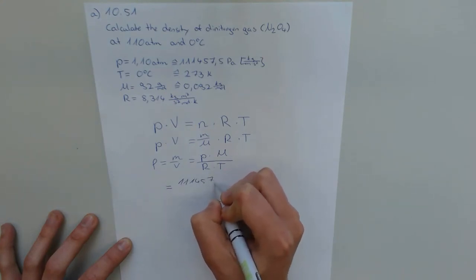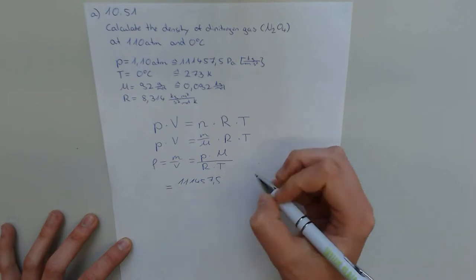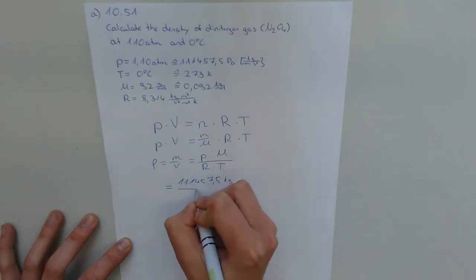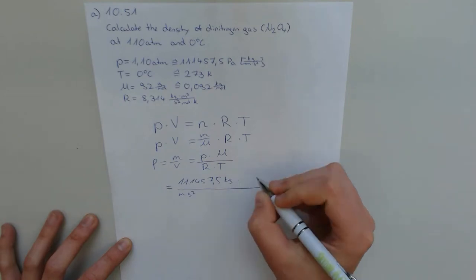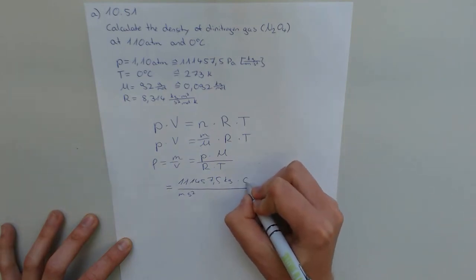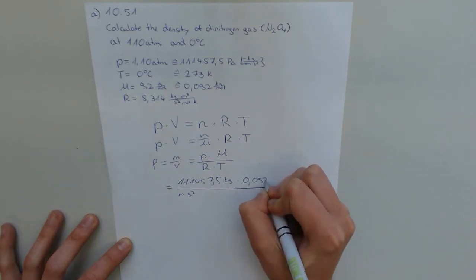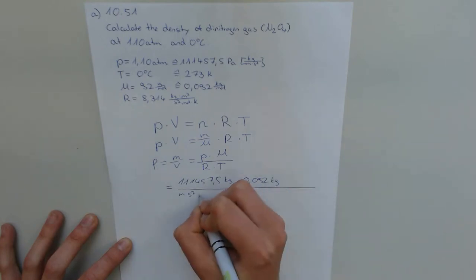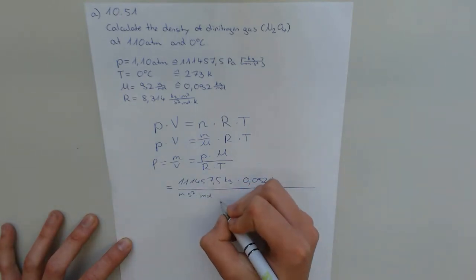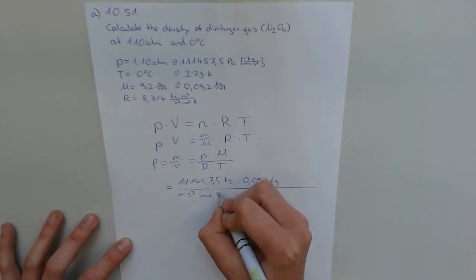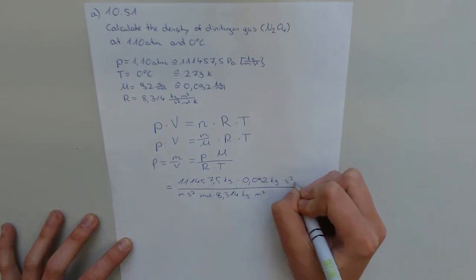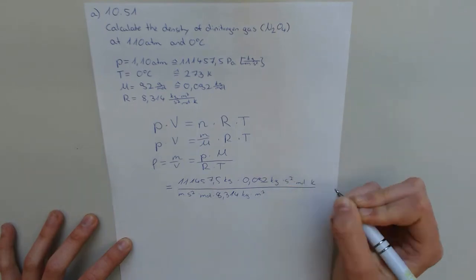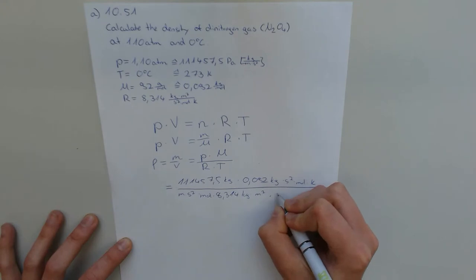And now we just fill in what we got given before. So, first of all, pressure, molar mass, and then divided by the gas constant and the temperature.